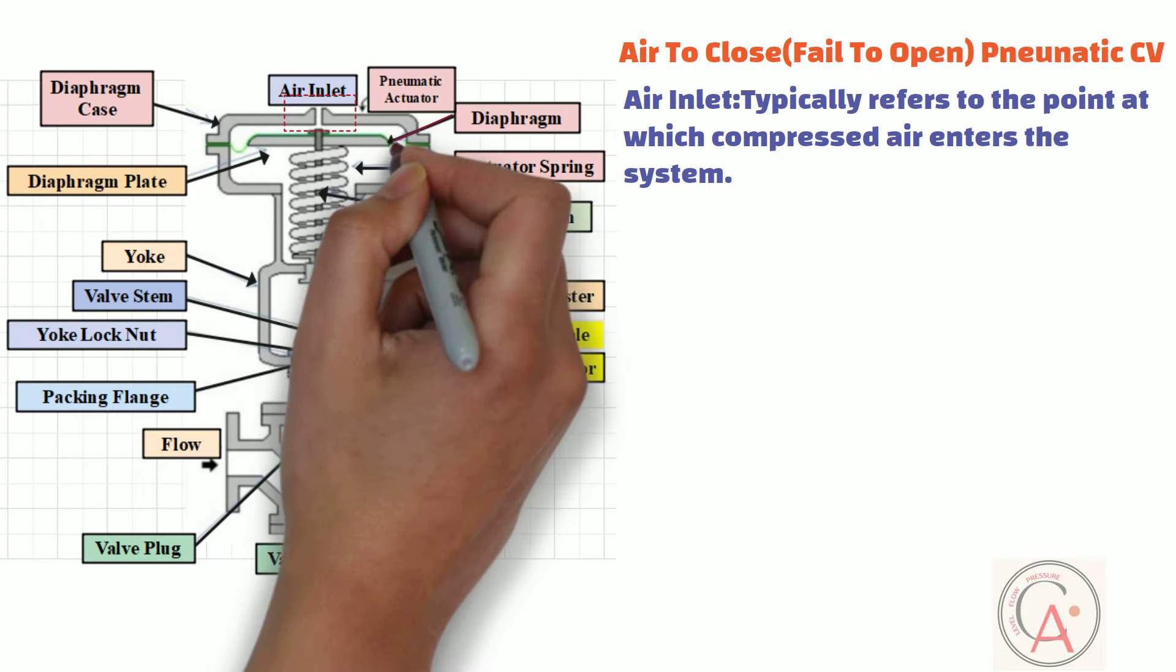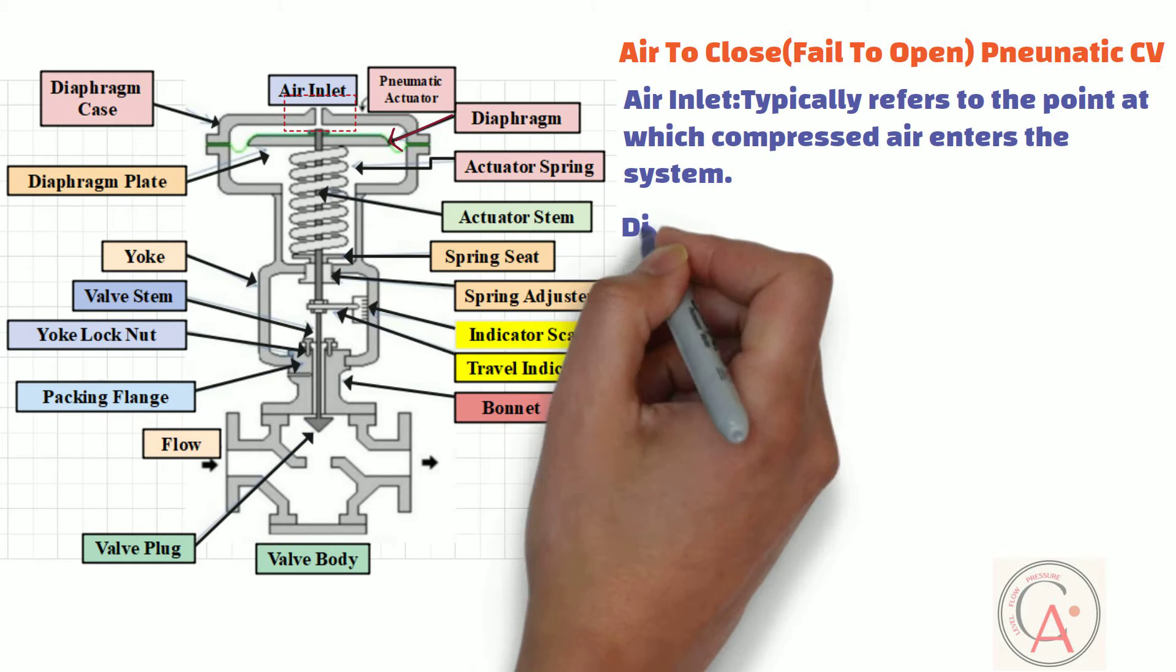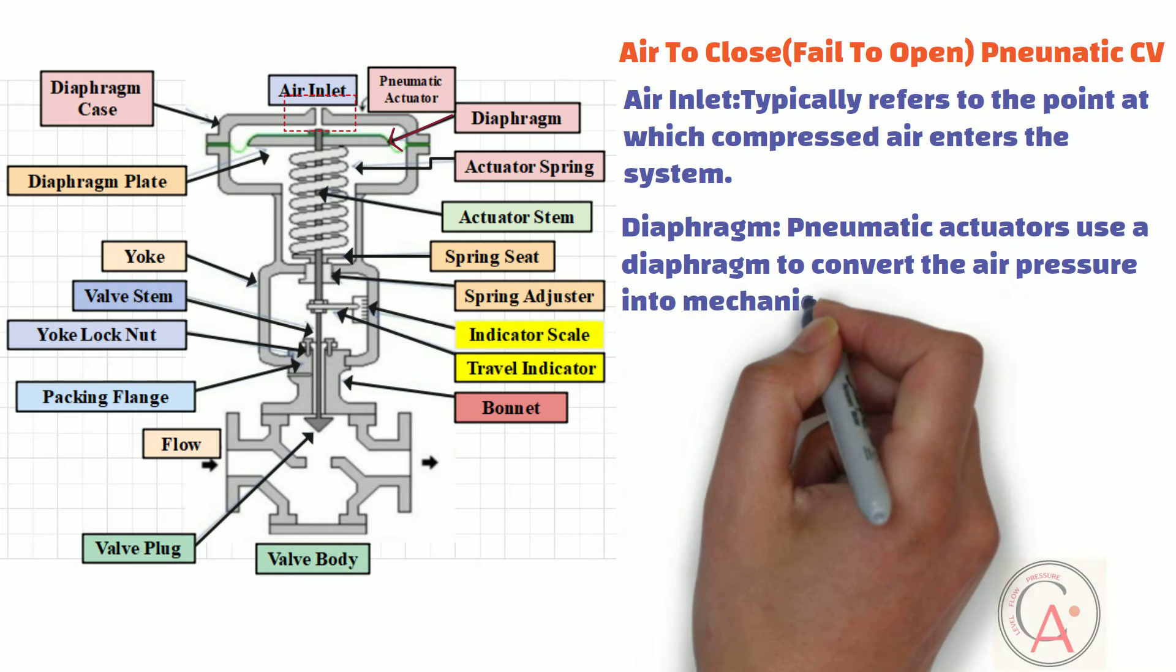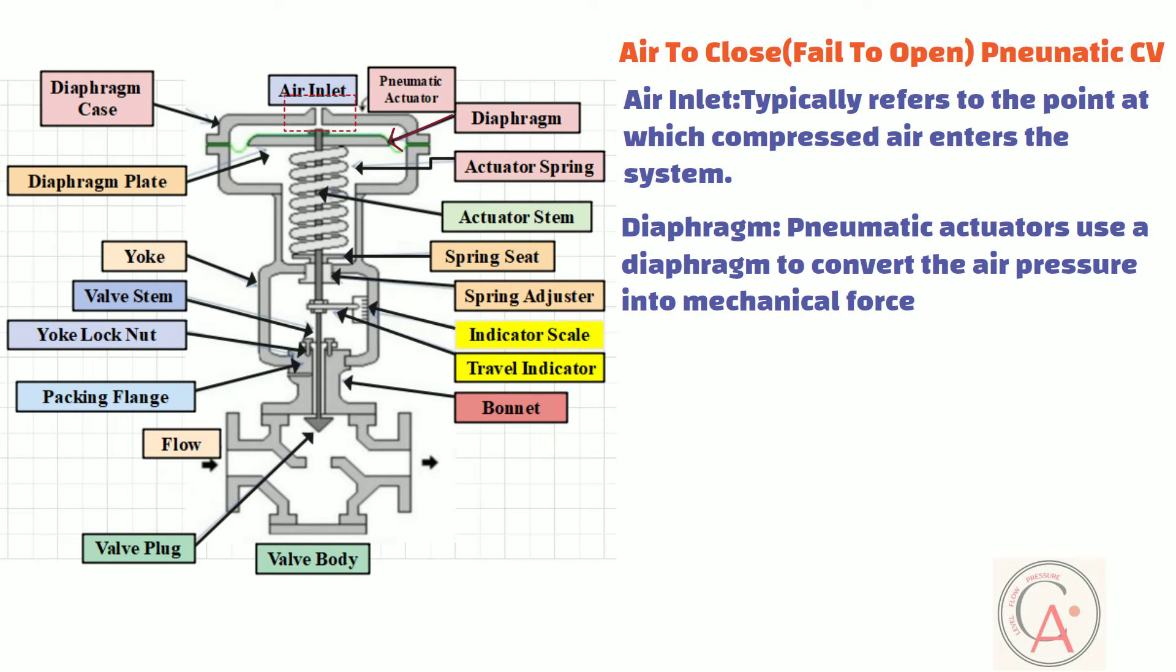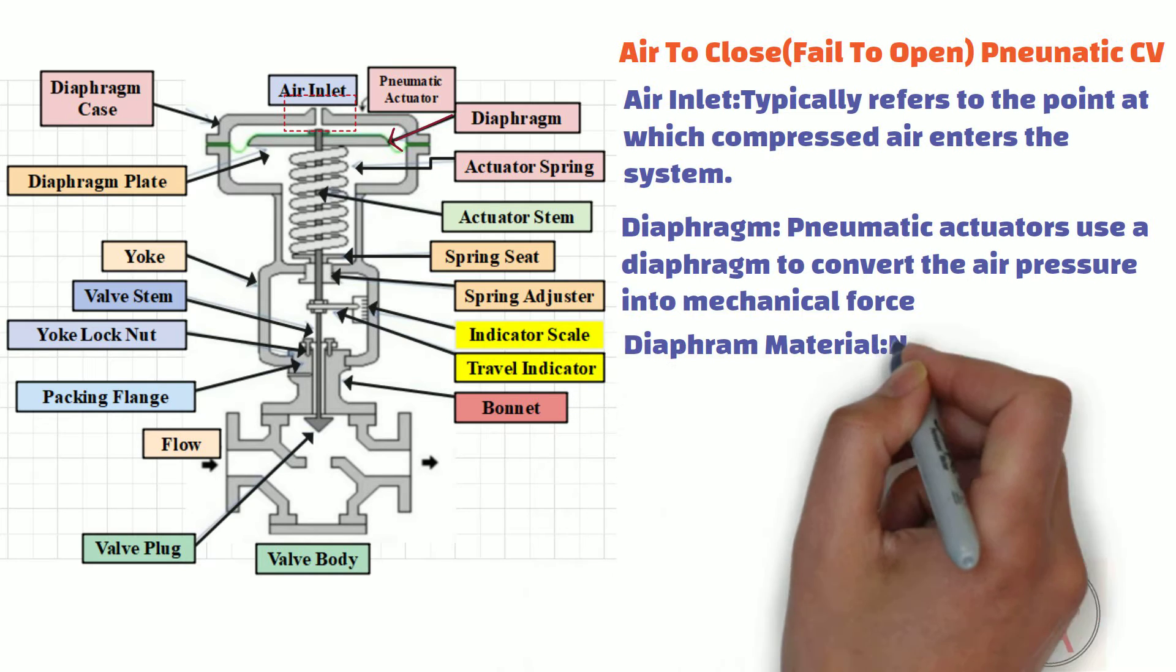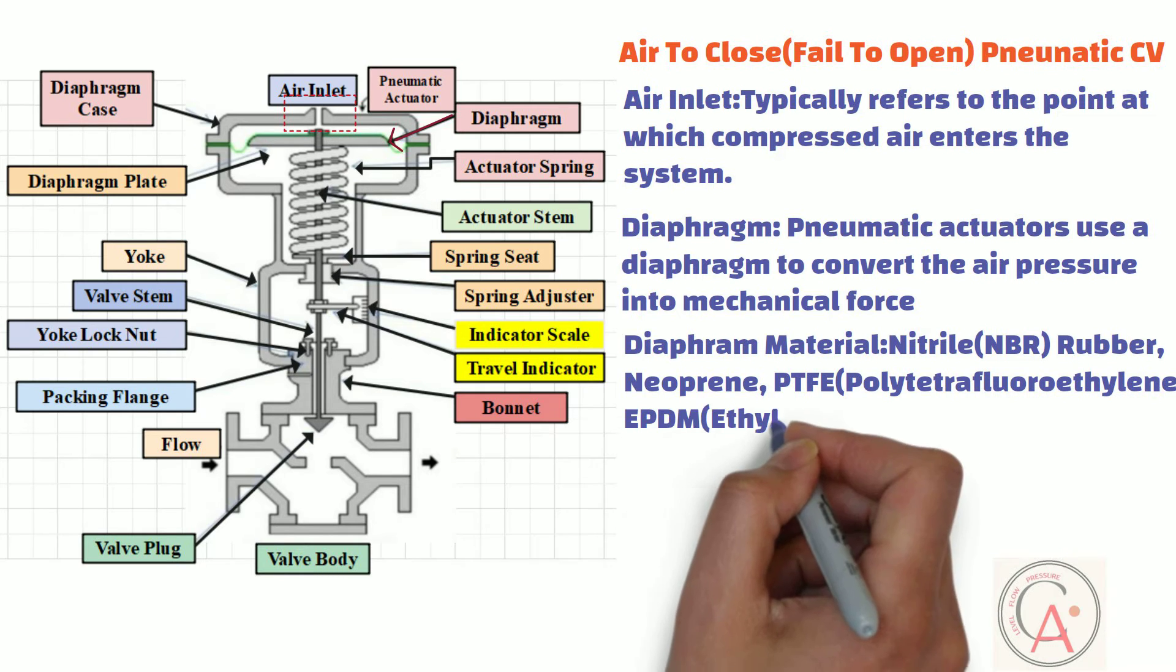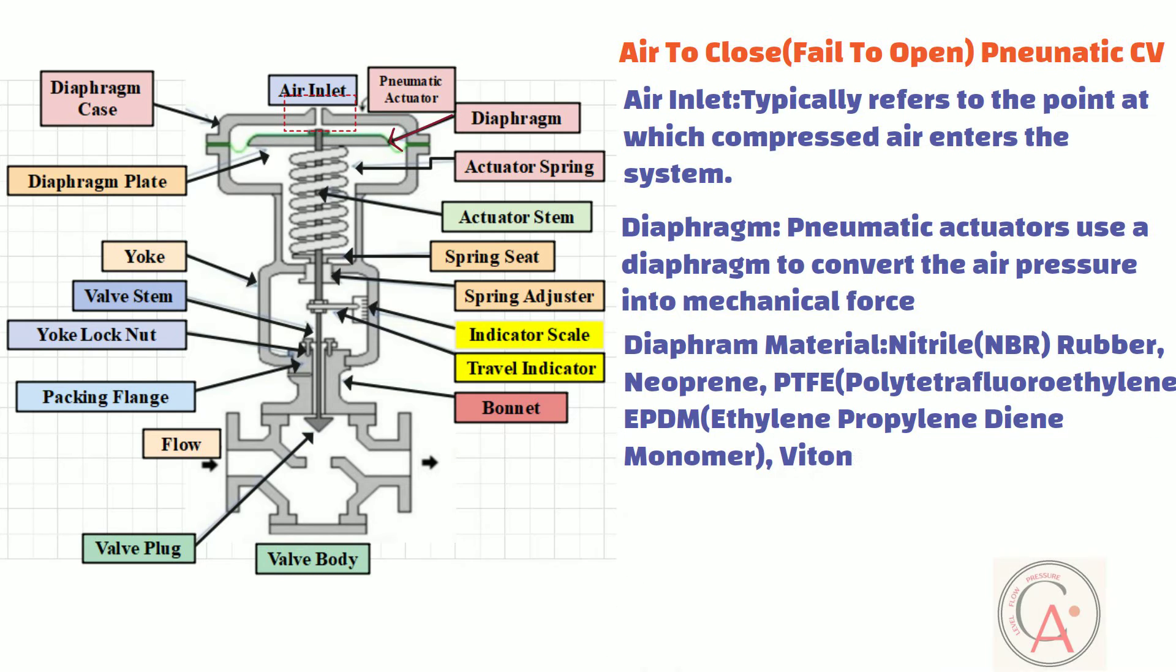The second most important part is the diaphragm. Pneumatic actuators often use a diaphragm to convert the air pressure into mechanical force. The diaphragm separates the actuator's air chamber from the valve body and moves in response to changes in air pressure, thereby positioning the valve plug. Nitrile rubber, neoprene, PTFE or polytetrafluoroethylene, EPDM or ethylene propylene diene monomer, and Viton are most commonly used as diaphragm material.